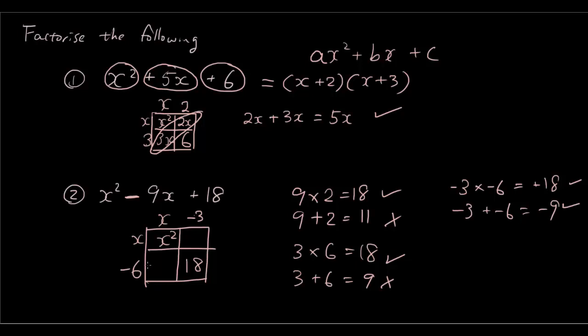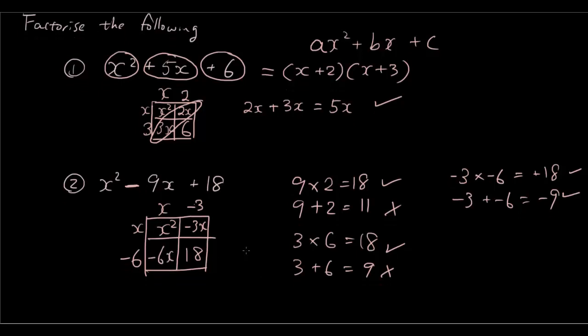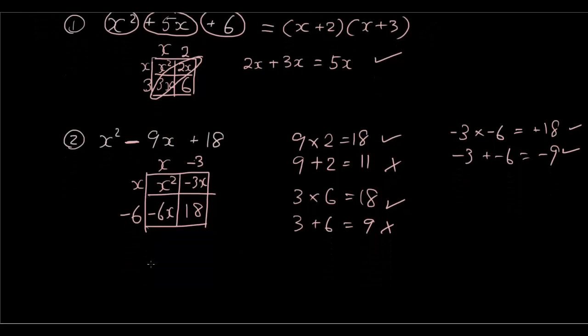Right because negative 3 times negative 6 is positive 18. Negative 3 times x is negative 3x, and negative 6 times x is negative 6x. So therefore we have, let's check the diagonal adds up to the term in the middle.